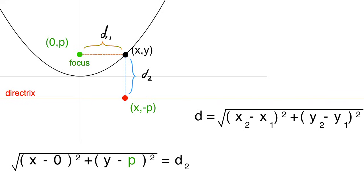We'll also take the coordinates of d2, which are (x,y) and (x,-p), and substitute them into the formula as well.